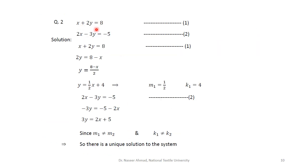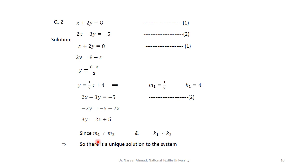For question 2, converting both equations to slope-intercept form and comparing, the slopes are found to be unequal. Since m1 is not equal to m2, there is a unique solution to the system.